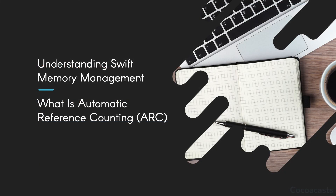There are times that Automatic Reference Counting isn't able to figure out when it is safe to deallocate a class instance. To avoid retain cycles and memory leaks, ARC needs your help. In the next episode of this series, we zoom in on retain cycles.